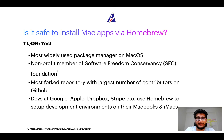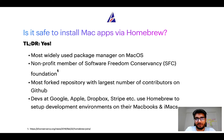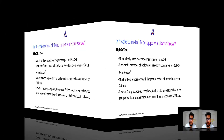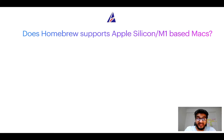Also, you might be surprised to know that Homebrew is the most forked project on GitHub and it has the largest number of contributors on its GitHub repository. Many devs at organizations like Google, Apple, Dropbox, Stripe, etc. use Homebrew to set up different development environments on their MacBooks and iMacs.